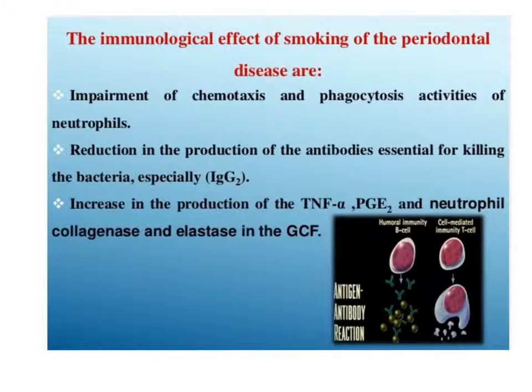The immunological effects of smoking on periodontal disease include impaired chemotaxis and phagocytosis activity of neutrophils and polymorphonuclear cells, and reduction in the production of antibodies essential for killing bacteria, especially IgG2. There is also an increase in the production of tumor necrosis factor-alpha, prostaglandin E2, and neutrophil collagenase and elastase in the gingival crevicular fluid.